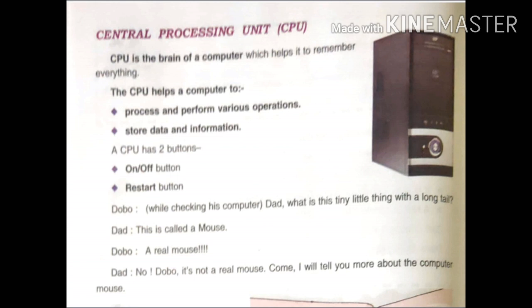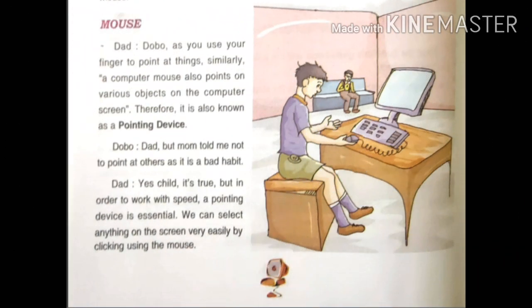Dobo asked: 'What is this tiny little thing with a long tail?' Dad replied: 'This is called a mouse.' Dobo asked: 'A real mouse?' Dad said: 'No Dobo, it is not a real mouse.' Dad explained: 'As you use your finger to point at things, similarly a computer mouse also points on various objects on the computer screen. Therefore it is also known as a pointing device.'